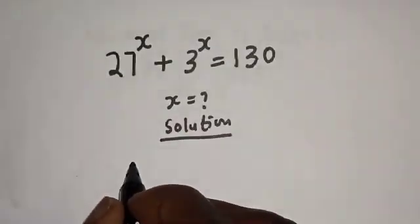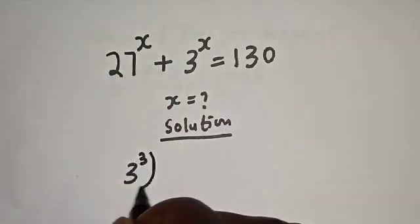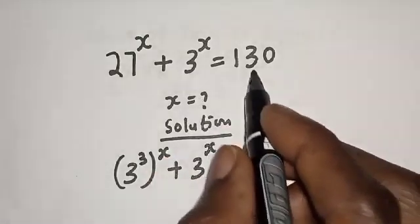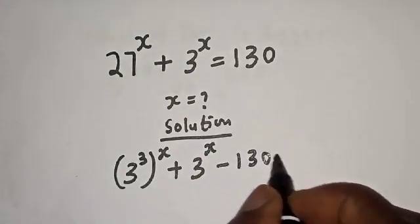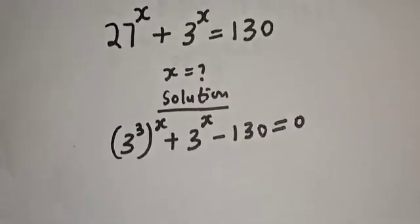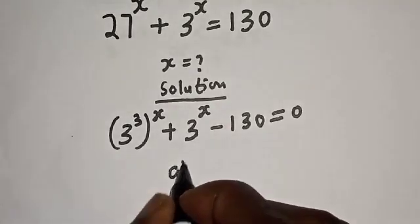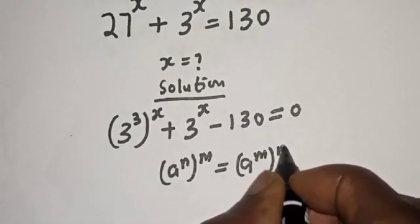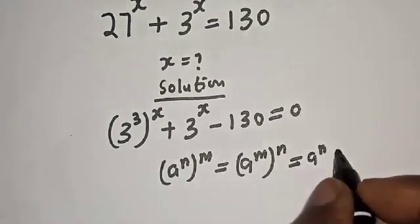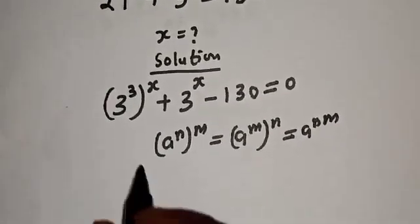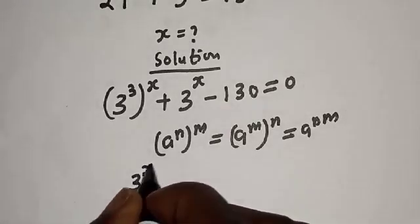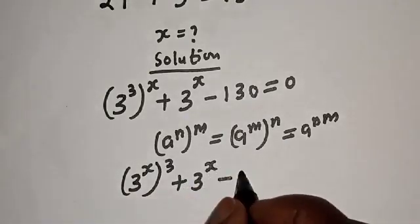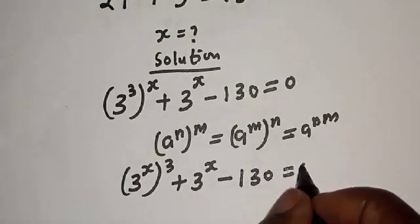27 raised to power s can be written as 3 raised to power 3, raised to power s, plus 3 raised to power s, then minus 130 is equal to zero. Take note of this rule: a raised to power n raised to power m is equal to a raised to power m raised to power n, which is equal to a raised to power n·m. So this becomes 3 raised to power s, raised to power 3, plus 3 raised to power s, minus 130 equals zero.